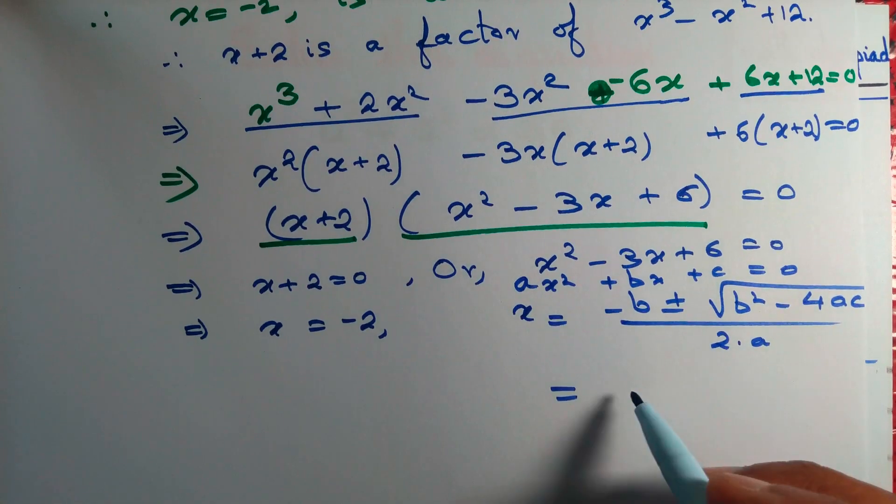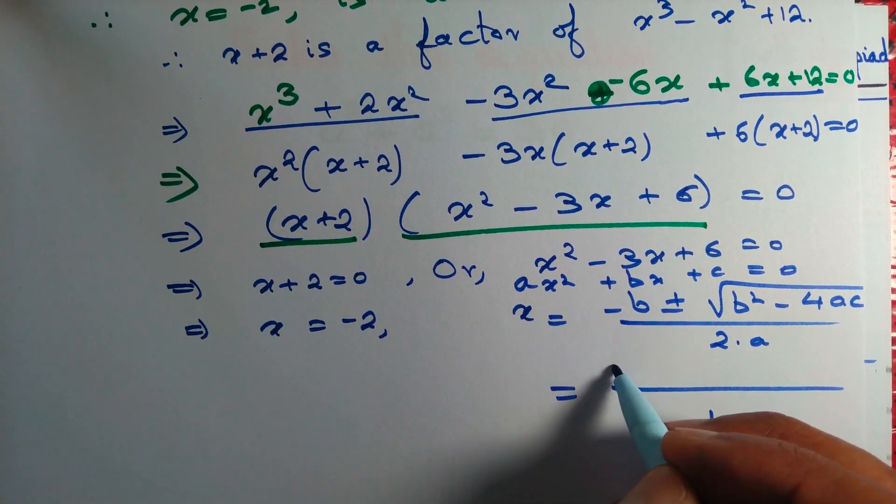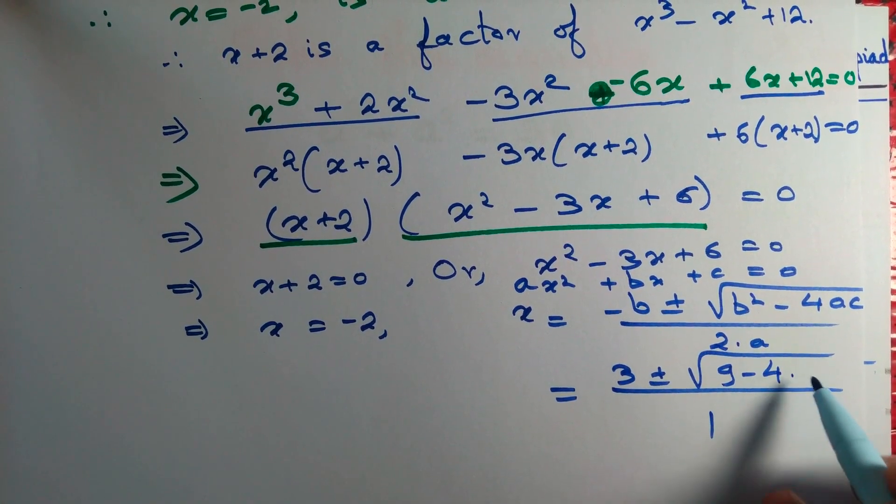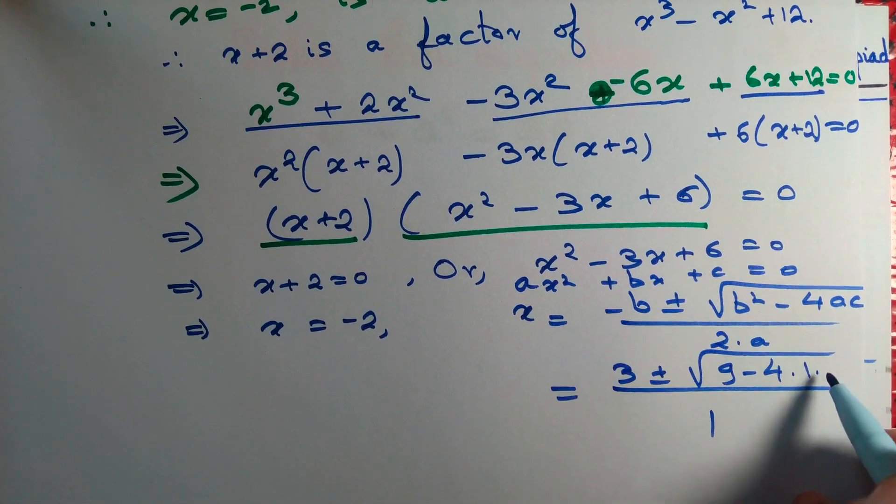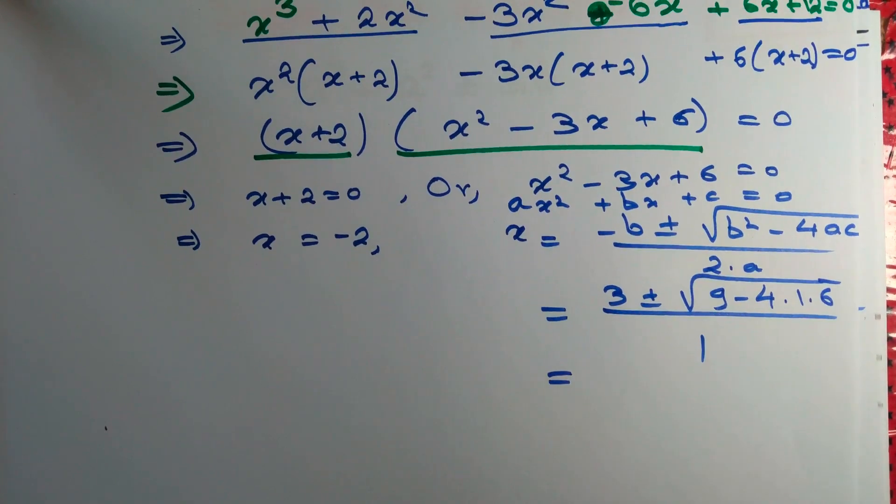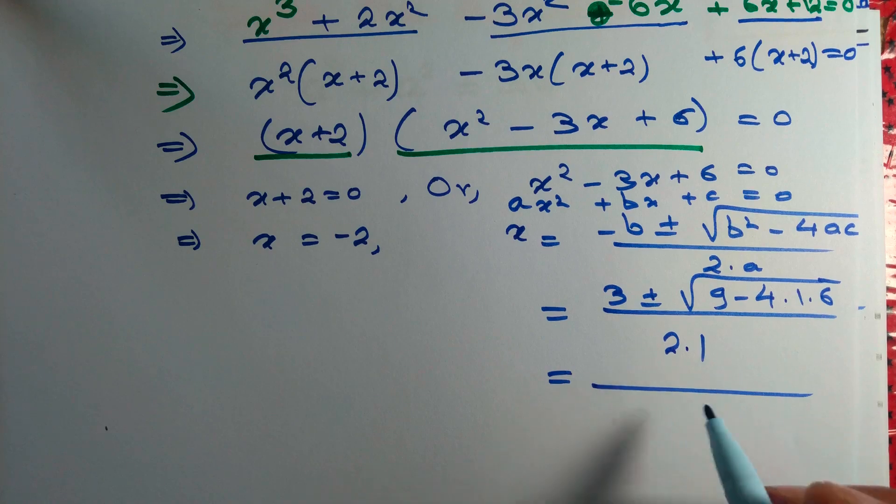Here a equals 1, b equals minus 3, so minus of minus 3 is plus 3, plus minus root over minus 3 whole square is 9, minus 4 into a is 1, c is 6. That's equal to 2 into a.